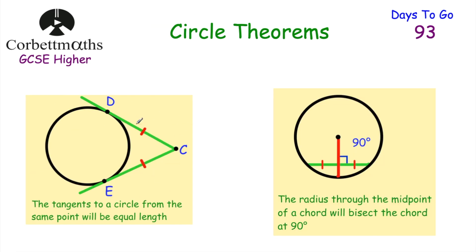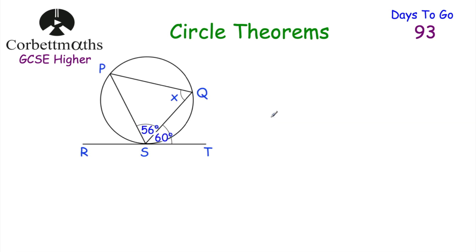Two more circle theorems: first, if you've got a point outside the circle and draw two tangents from it — say from C to D and C to E — those two tangents will be the same length as each other. Second, if you've got a chord and a radius, the radius will bisect the chord at 90 degrees — cutting the chord in half at a right angle.